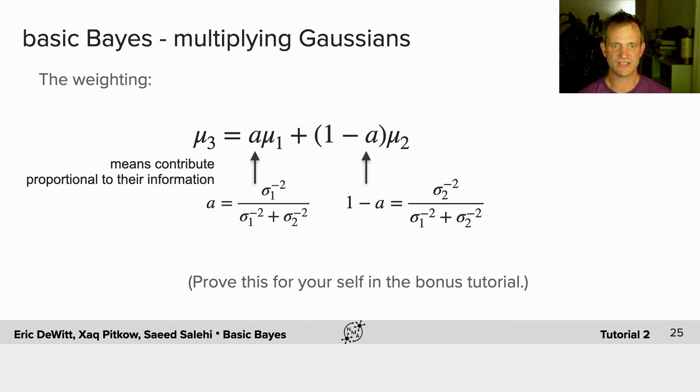And that weighting is actually related to the amount of information that each Gaussian has. Remember that's just 1 over the variance. You can prove this for yourself in the bonus tutorial. Also note that information adds.